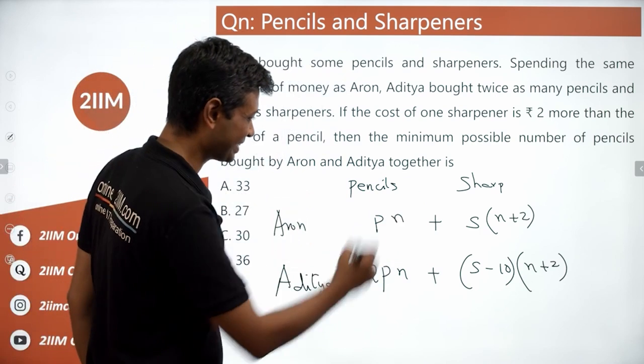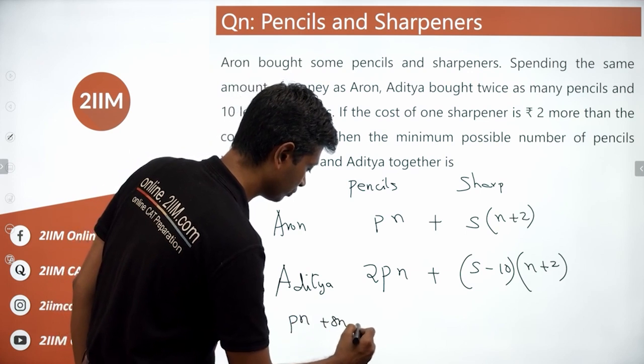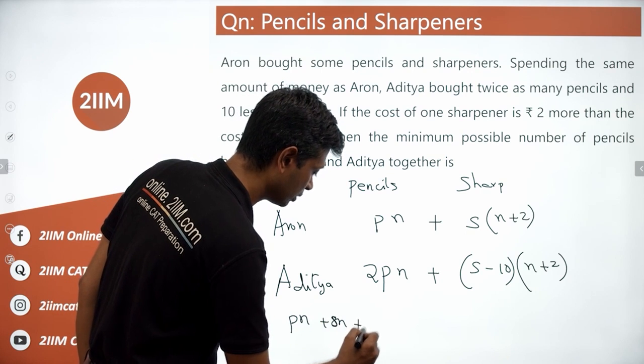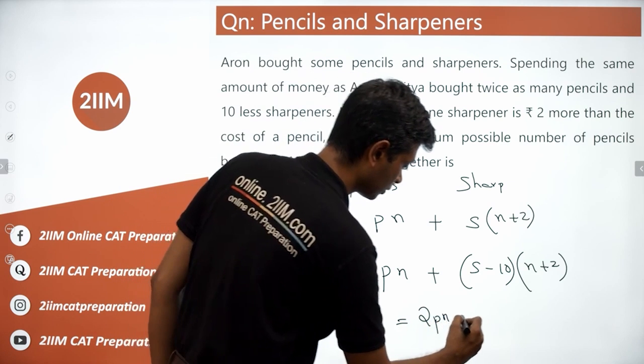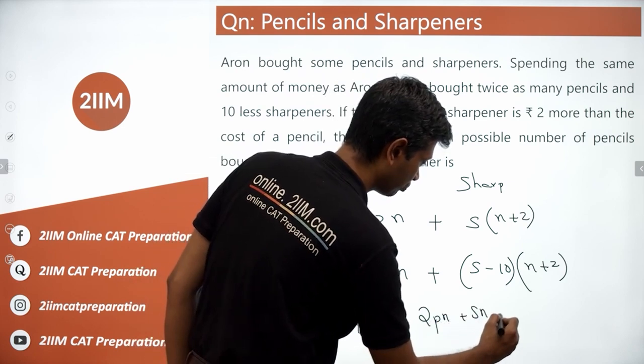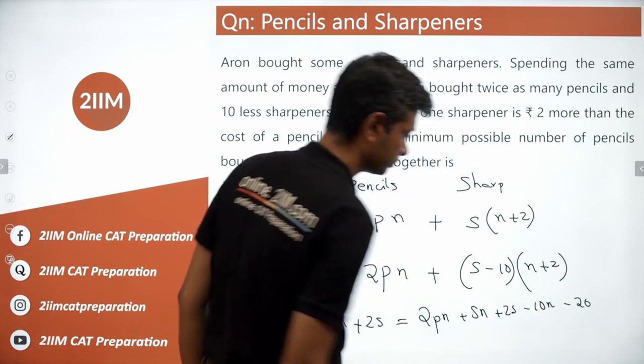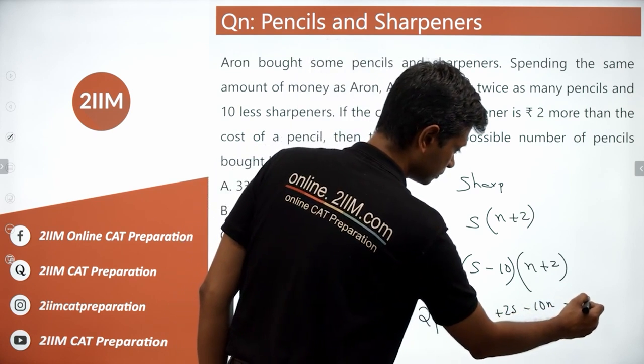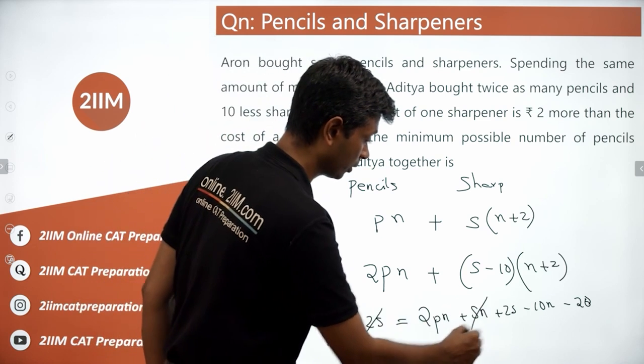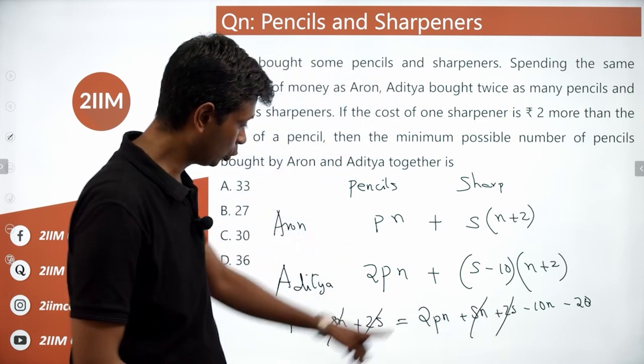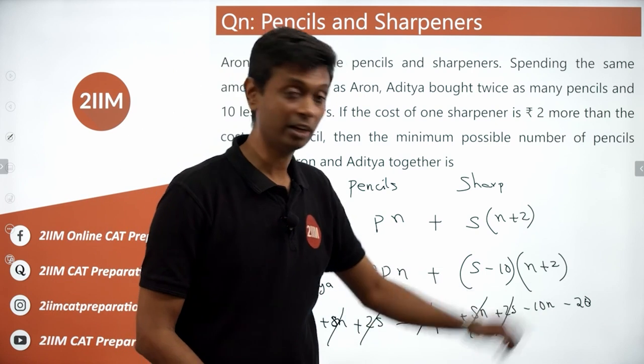P n plus S n plus 2S equals 2P n plus S n plus 2S minus 10 n minus 20. There is S n plus 2S which will continue to be there on both sides. There is 2P n here, only P n here, one of those we can cancel.